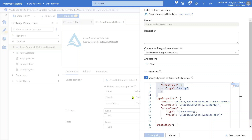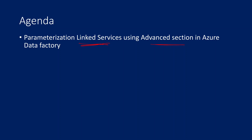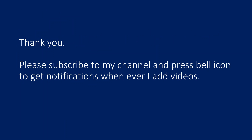To verify these parameters are created successfully, let's create a dataset using this Delta linked service. The moment I select this linked service inside the dataset, I can see cluster ID and access token parameters being populated from the linked service. That means the linked service is parameterized even without UI experience - using the advanced section, copying the JSON properties, creating parameters, and using them as values wherever needed. I hope you got a clear idea. Thank you for watching, please subscribe and press the bell icon.